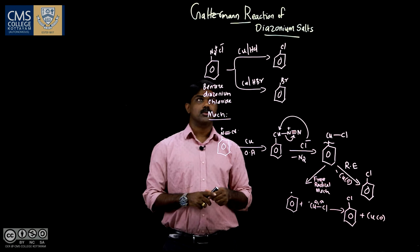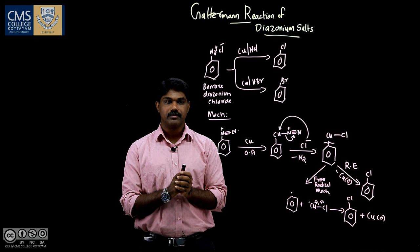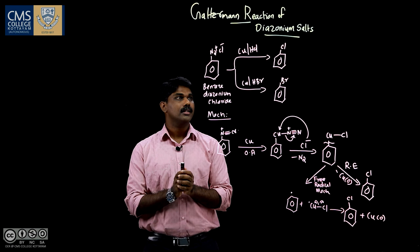So in Gatterman reaction we are converting benzene diazonium salt or arene diazonium salt into arene chlorides and arene bromides using copper powder. Thank you.